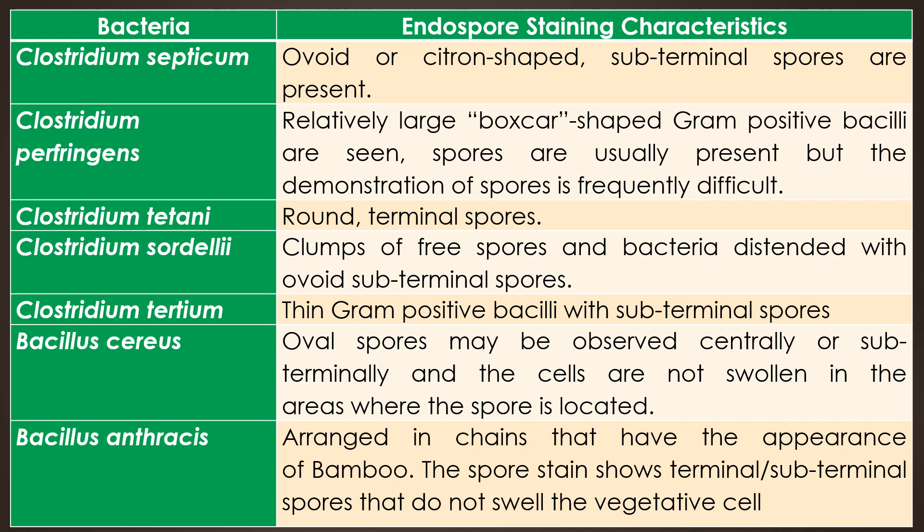Clostridium tertium is a thin gram-positive bacilli with subterminal spores. The sixth one is Bacillus cereus — it is an oval-spored bacterium and the spore may be observed centrally or subterminally, and the cells are not swollen in the areas where the spore is located. Finally, Bacillus anthracis is a large gram-positive bacilli with individual cells having square or slightly concave ends. Often the organisms are arranged in chains that have the appearance of bamboo. The spore stain shows terminal or subterminal spores that do not swell the vegetative cells.